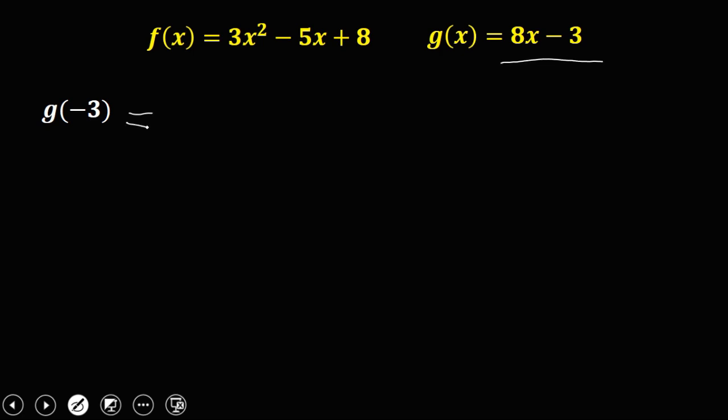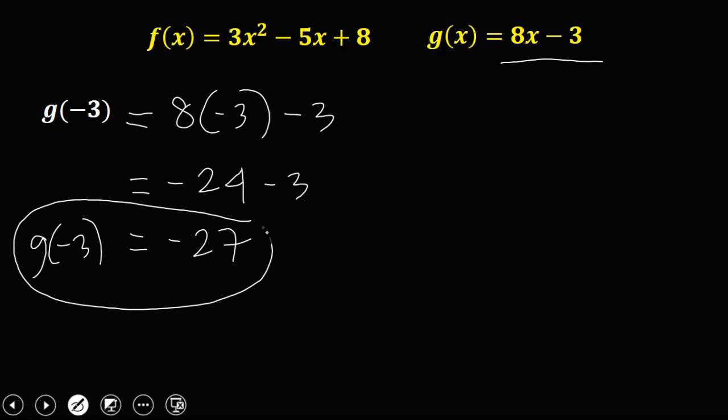So that's 8 times negative 3 minus 3. So we have now 8 times negative 3, that's negative 24, then minus 3. So negative 24 minus 3, this one is negative 27. So therefore g(-3) is negative 27. So this is how to evaluate a function.